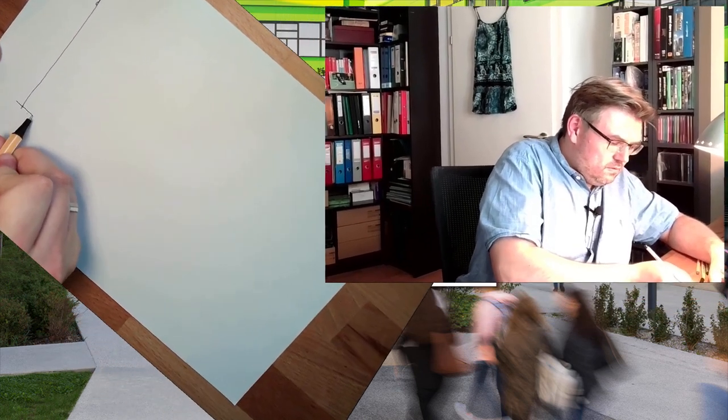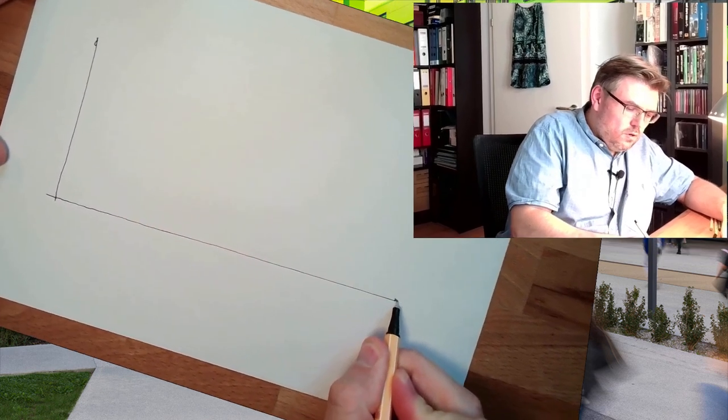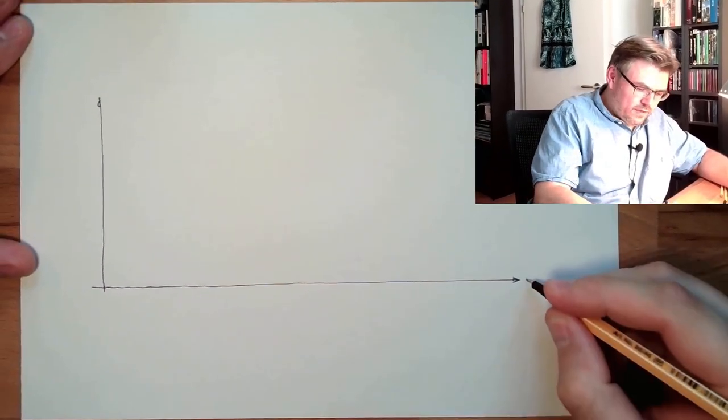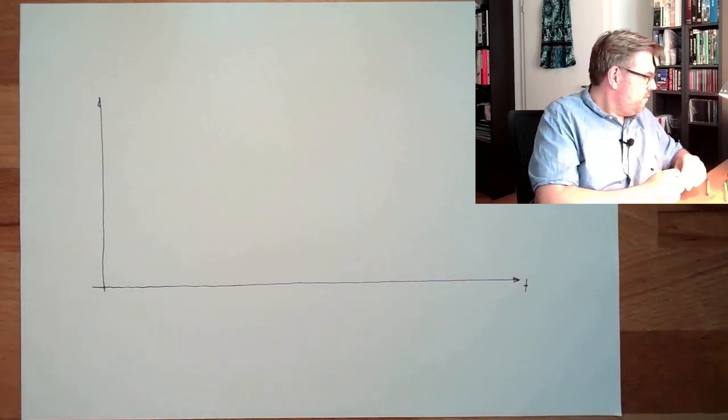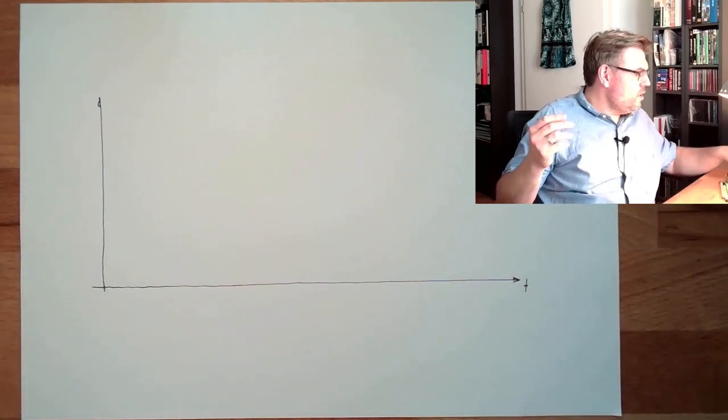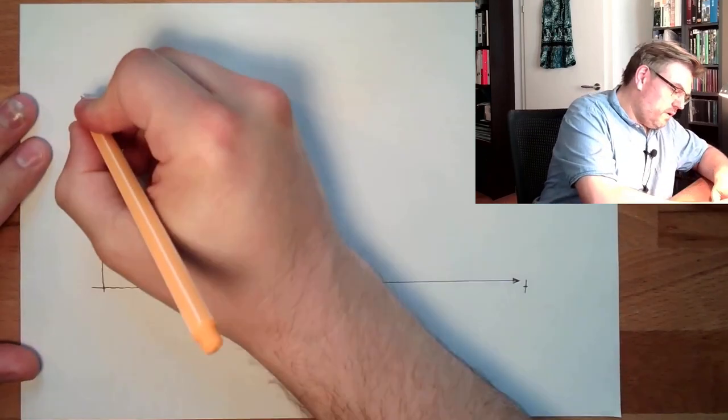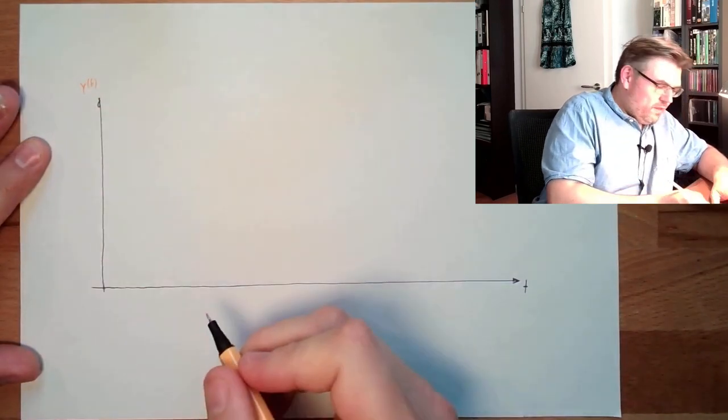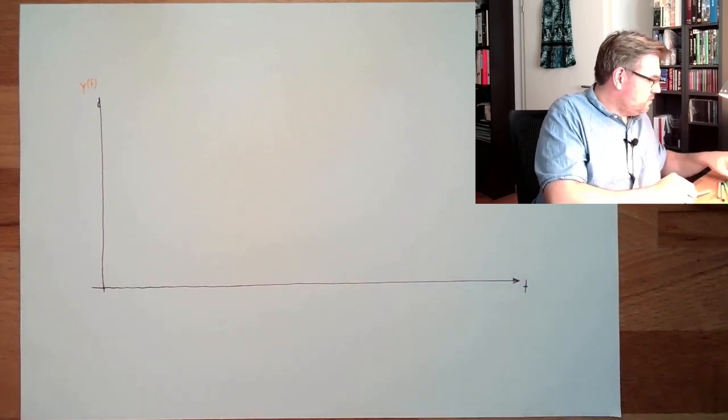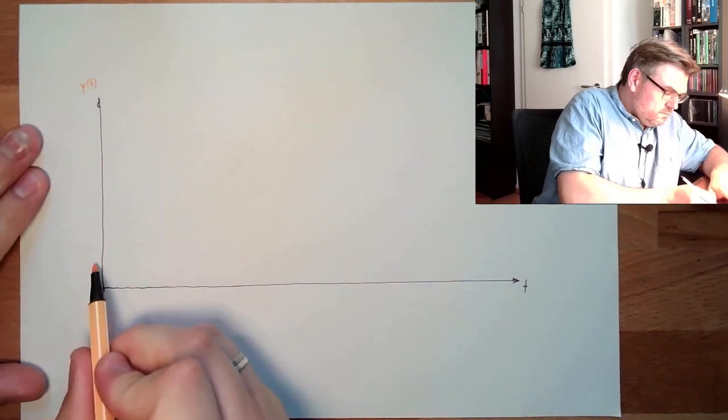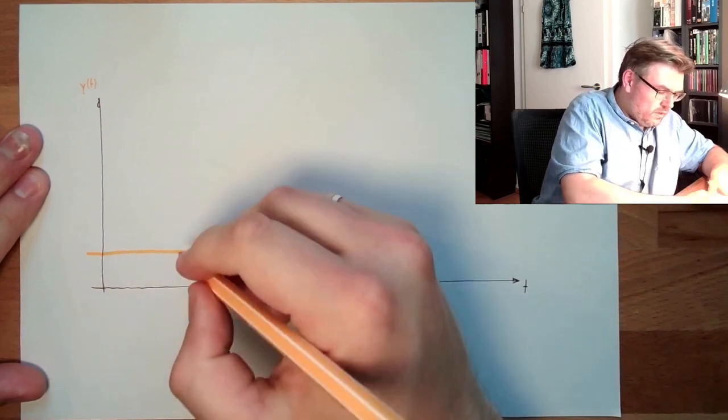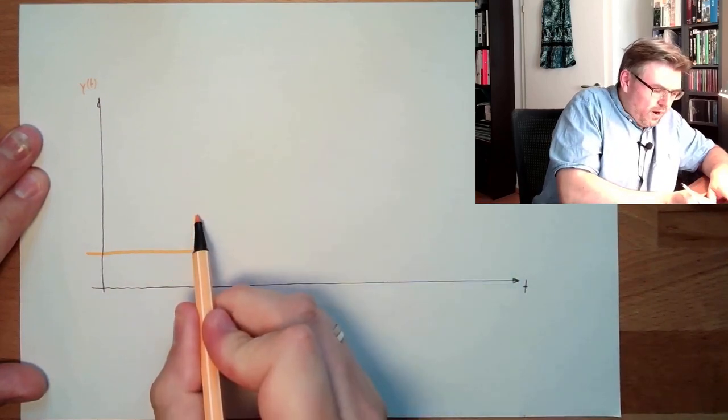I'll show you simply what I mean. So let's remember which parameters a system might have. Here's the time, and to analyze a system, we may do a reference variable jump. So there is a Y from T, and this Y from T is at a certain value and at a certain point in time, we jump to a new Y from T.